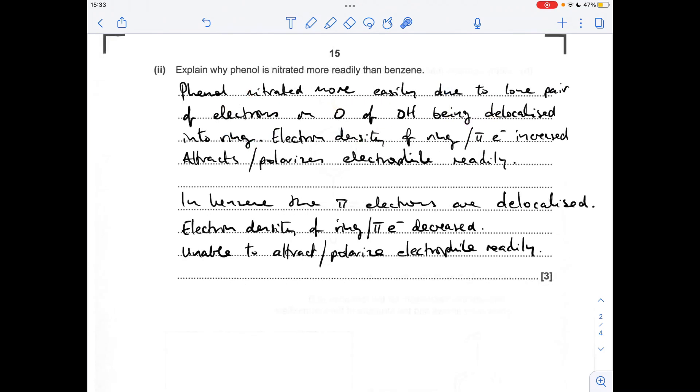Next part, really common question I'm sure you've seen this loads of times now. Phenol's nitrated more easily due to the lone pair of electrons on the oxygen of the OH group being delocalized into the ring. That increases the electron density of the ring or you could say the pi electron density is increased and therefore it's going to attract or polarize electrophiles more readily.